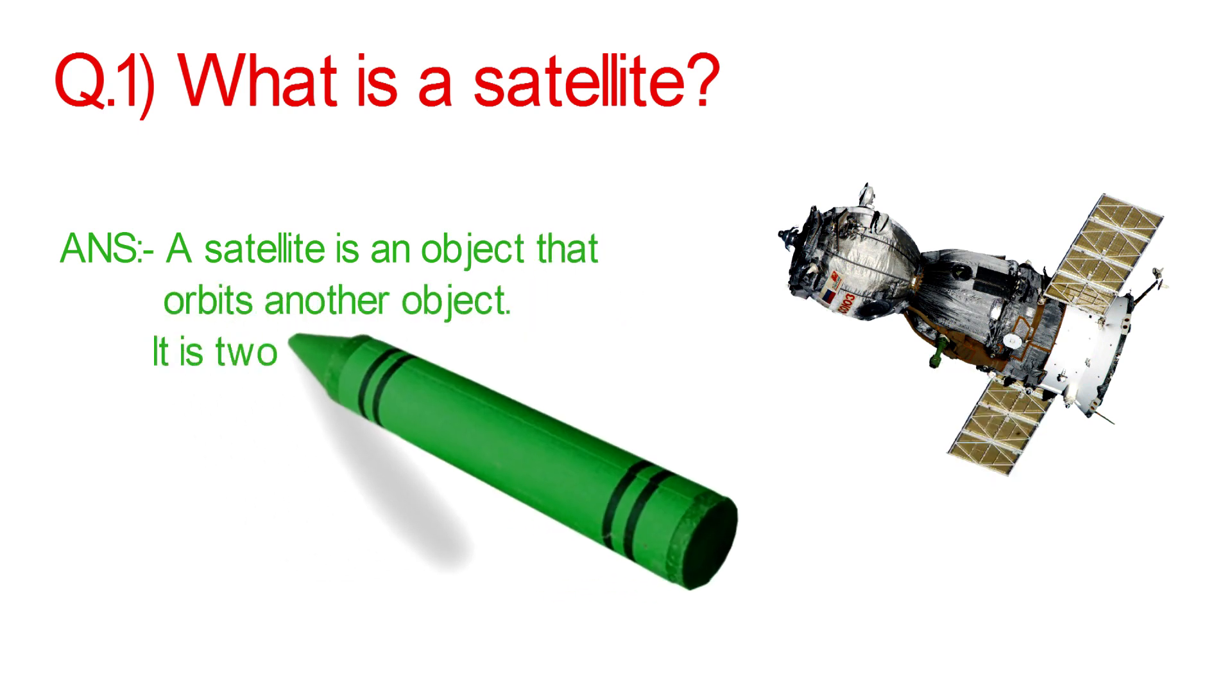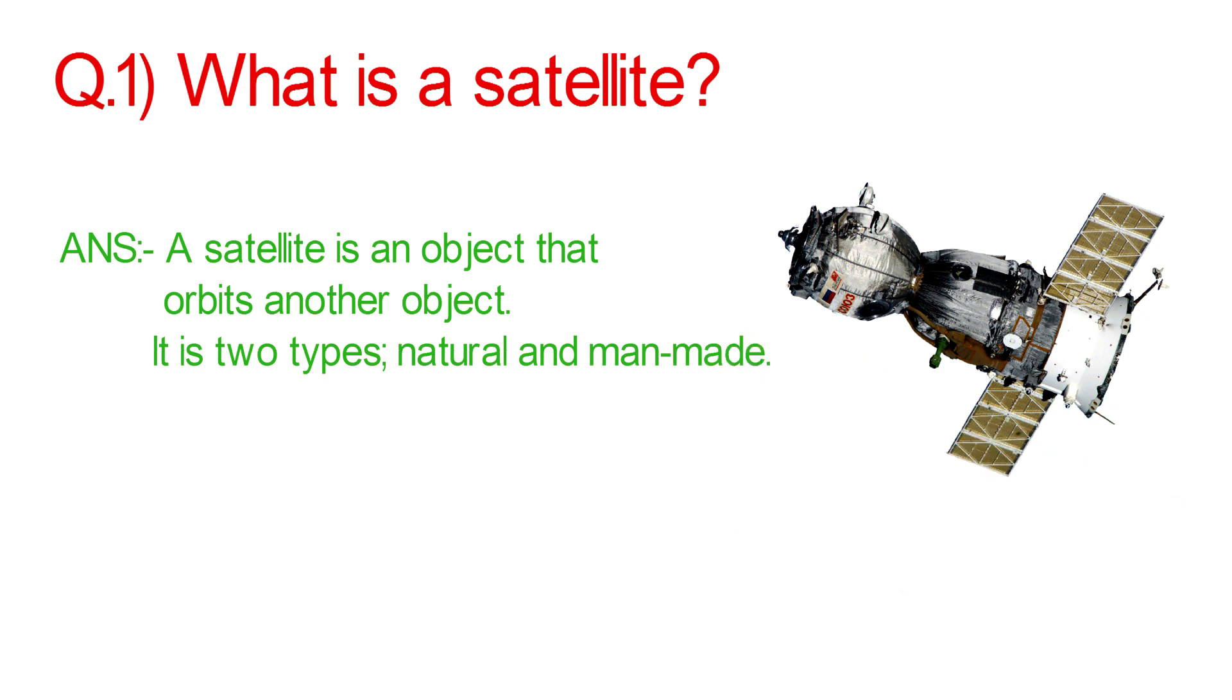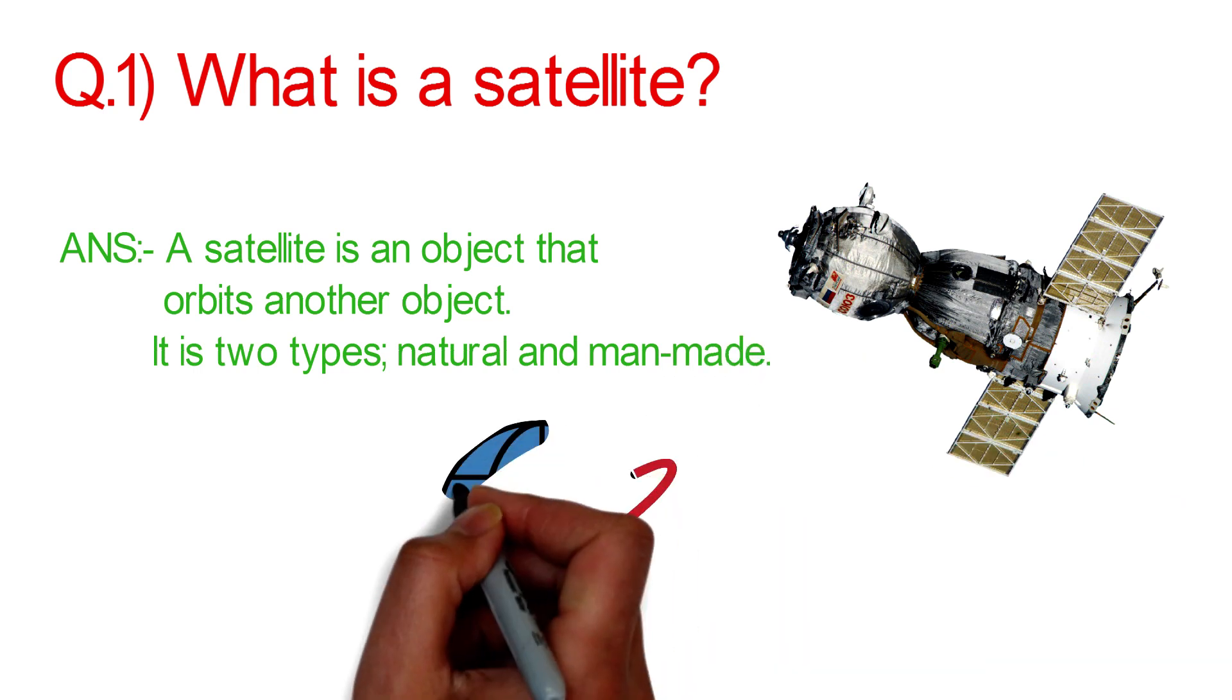Mainly there are two types of satellites: natural and man-made. Moon is an example of a natural satellite.